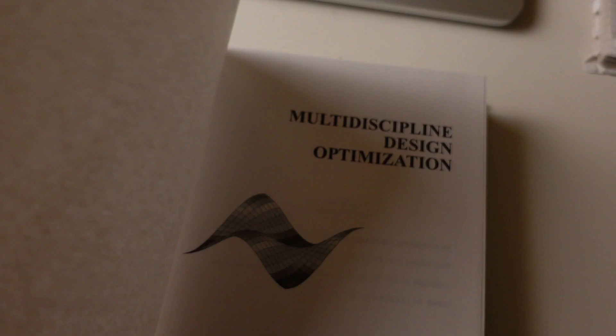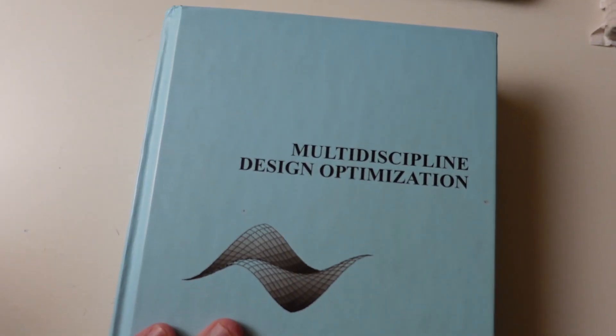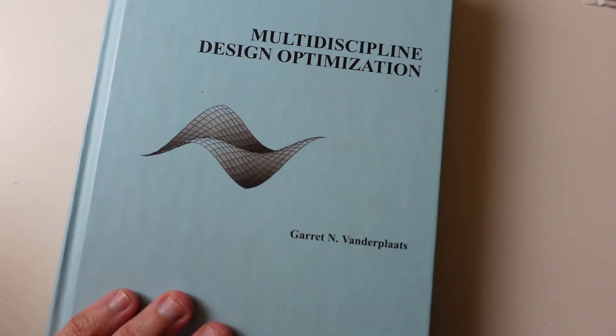Information about the book, information about Genesis, which is the general purpose software used for running optimization analysis, which was developed by the author of this book, Garrett van der Plaats.